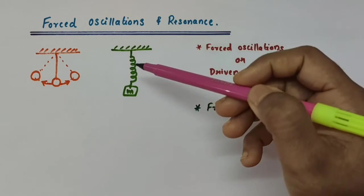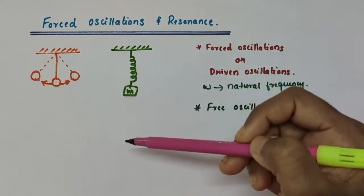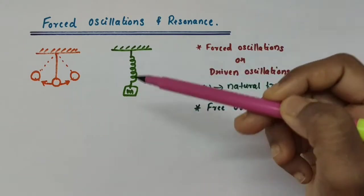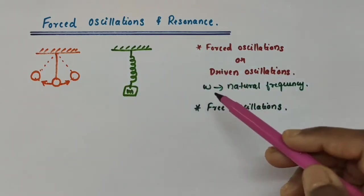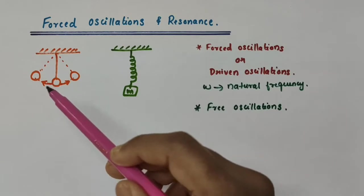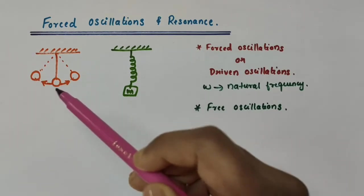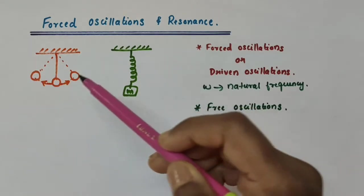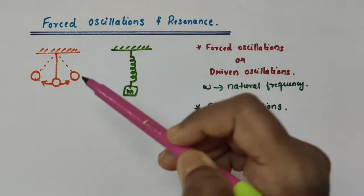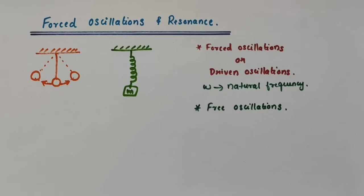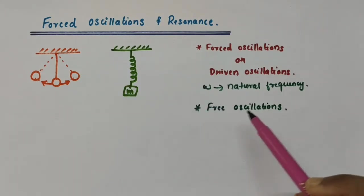When this block attached to a spring is displaced from its equilibrium position, it oscillates about a mean position with a natural frequency omega. Similarly, when this simple pendulum is displaced from its equilibrium position, it oscillates about the equilibrium position with a natural frequency omega. Such oscillations are called free oscillations.